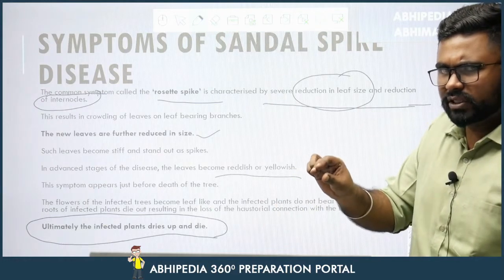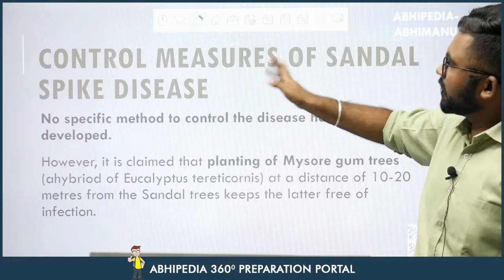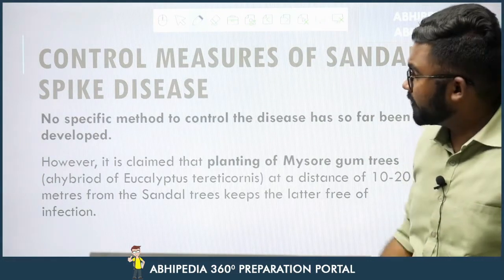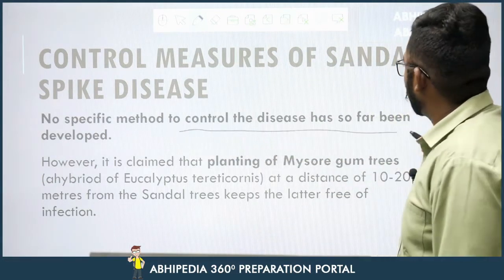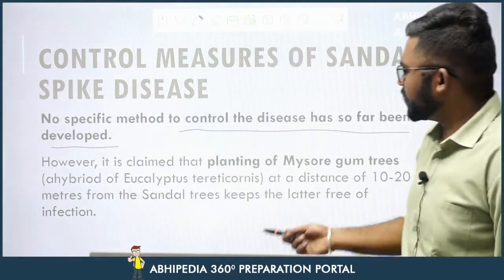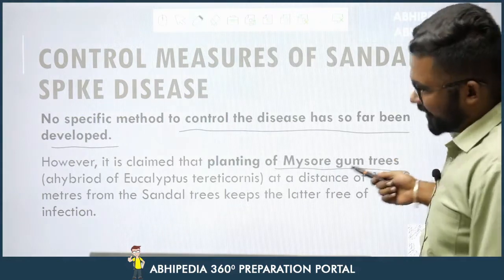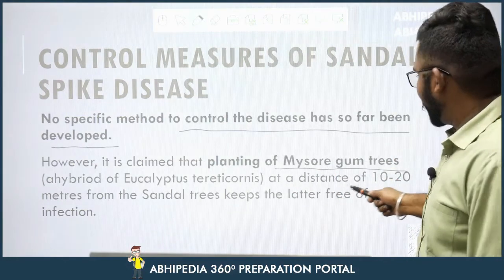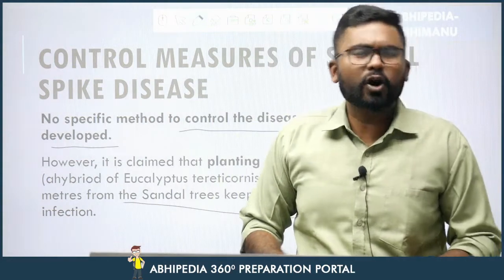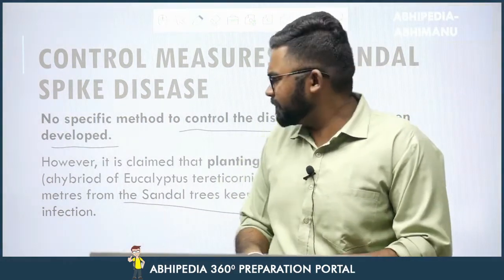Regarding control measures — there is no specific method to control this disease that has been developed so far. However, there is an advisory that planting Mysore gum trees at a distance of 10 to 20 meters can protect your plant from infection. This is observational science, so it is mentioned here.